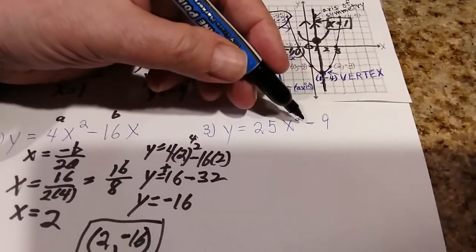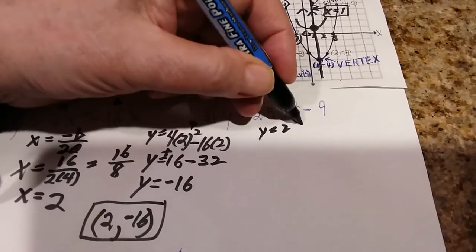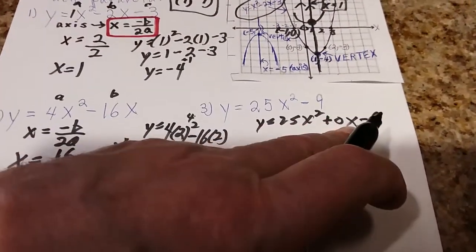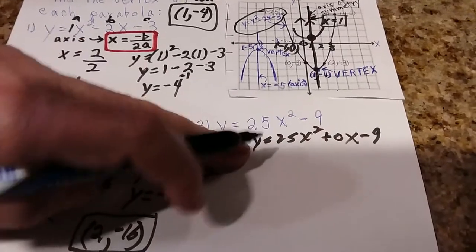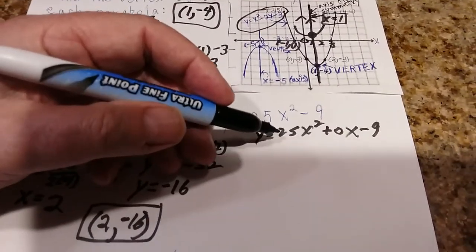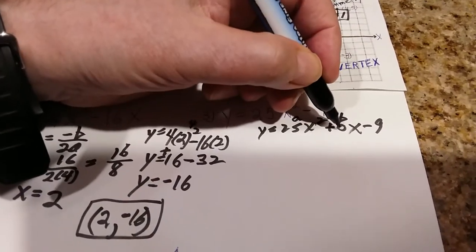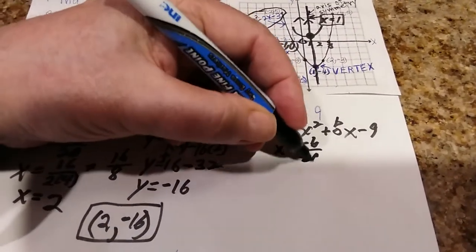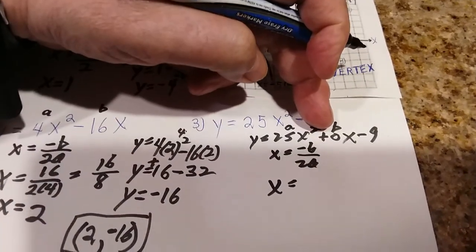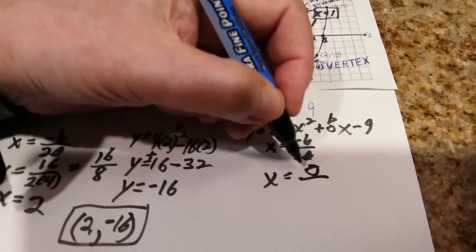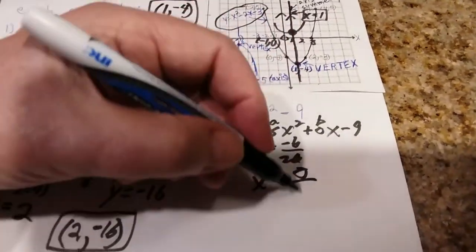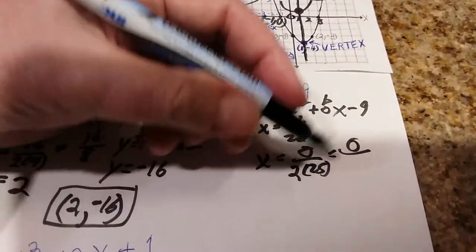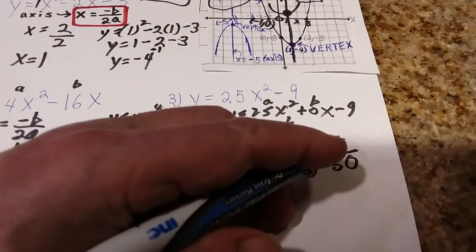Here's an example where there is no x term. You can think of it as 25x² + 0x - 9, because 0 times any number is always 0. So a is 25, b is 0, and c is -9. Using the formula -b over 2a: the numerator is 0 — you don't need a sign — and the bottom is 2 times 25, which is 50. Zero divided by 50 is 0, so the axis of symmetry is x = 0.